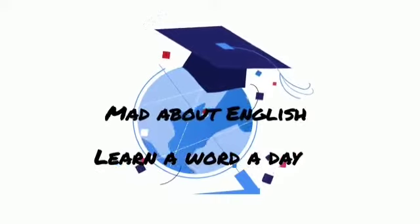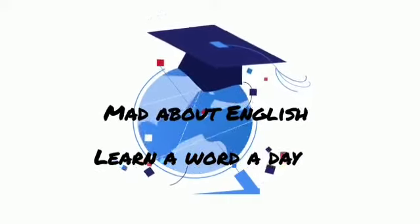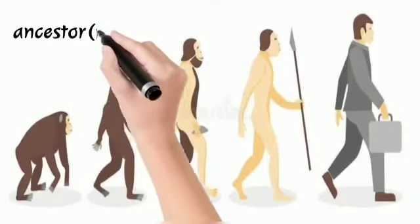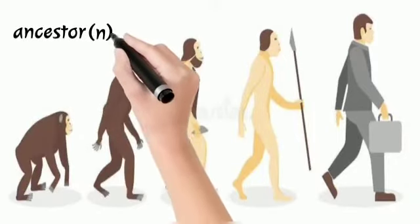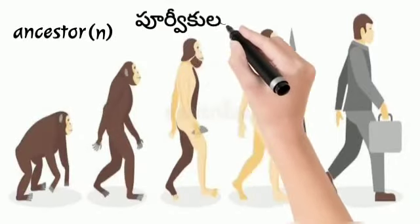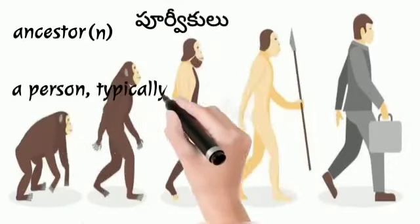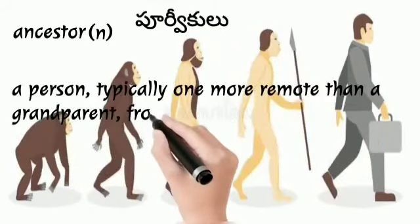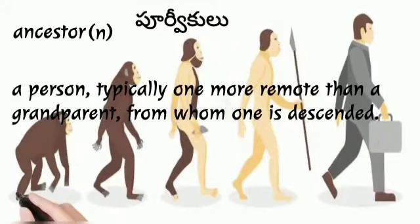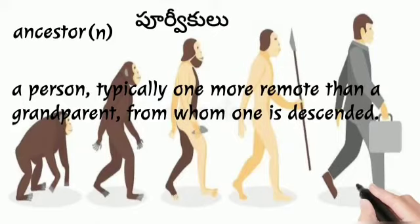Hi dear ones, welcome back to Mad About English. Today's word is 'ancestor'. It's a noun — a person, typically one more remote than a grandparent, from whom one is descended.